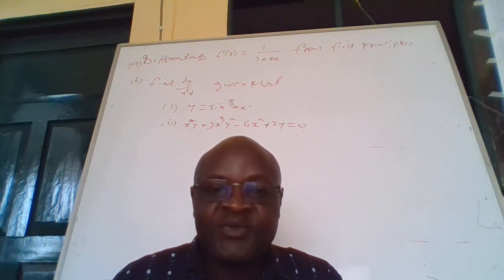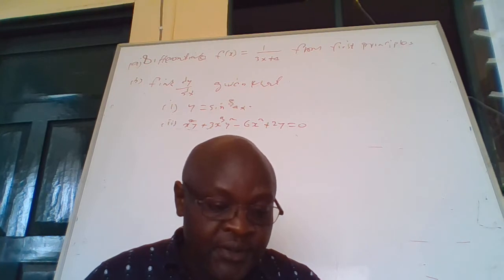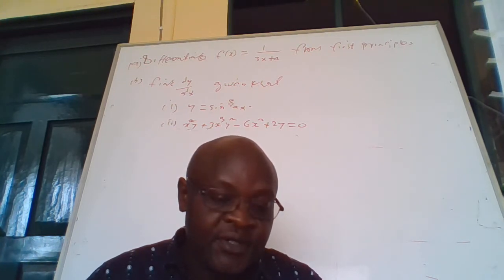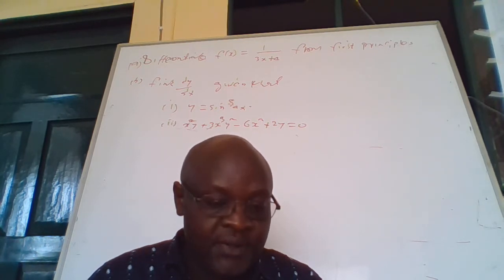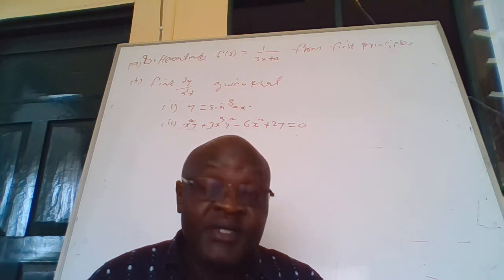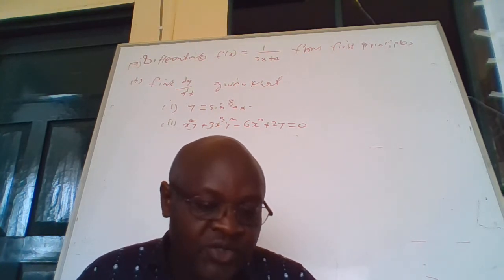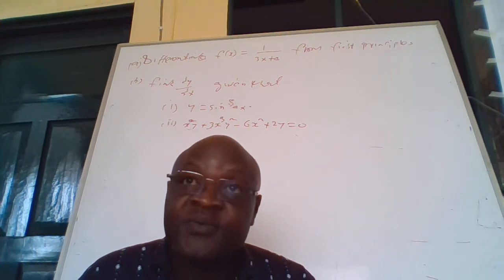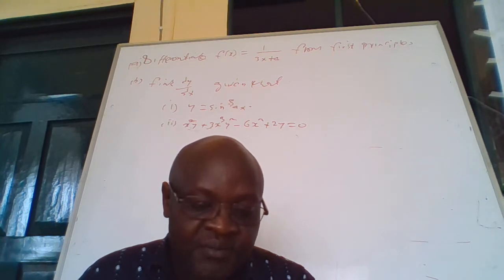Good evening and welcome to this discussion. We have a question on the board. They want us to differentiate f of x equals 1 over 3x plus 4 from first principle. Then they also want us to find dy/dx given that: roman 1, y equals sine 4x cubed; and roman 2, x squared y plus 3x cubed y squared minus 6x squared plus 2y squared equals 0.